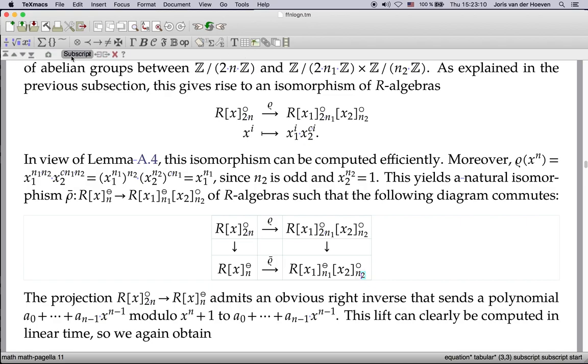The last toolbar is highly context dependent and we call it the focus toolbar. Indeed its contents depends on the current focus. Roughly speaking this is the innermost structure that contains the cursor. For instance in our example here we are inside the subscript and the current focus is on this subscript.